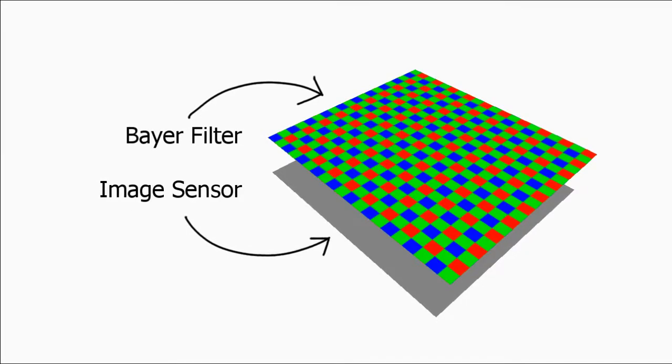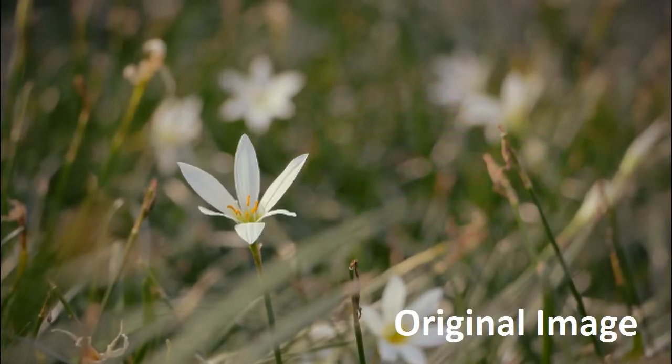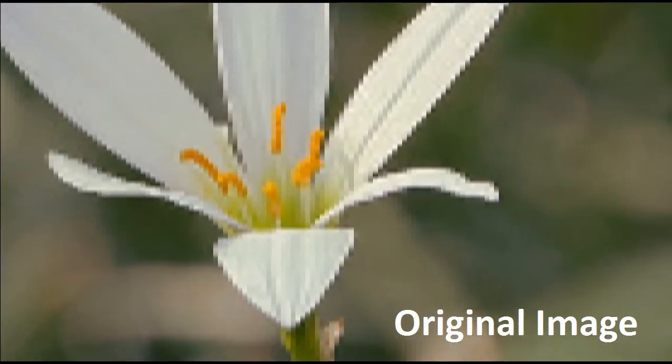To get your final nicely colored image, basically a pixel borrows the color information from its neighbors, while at the same time providing color information to the neighbors that need it. What this means is the resolution you're really getting out of your sensor is slightly lower than what you would expect. Throughout the image, for every small group of pixels, certain colors are actually being shared and not all individual pixels have their own color information.